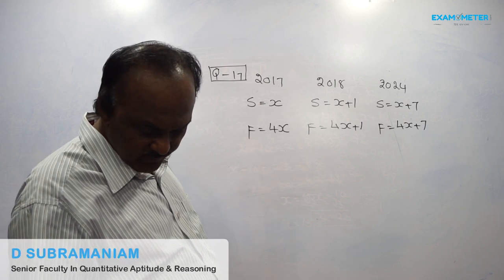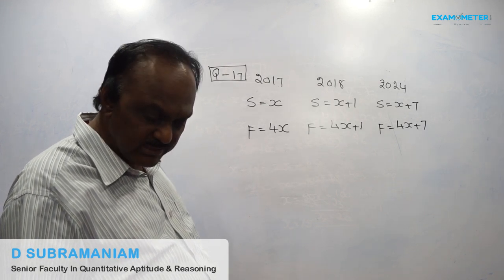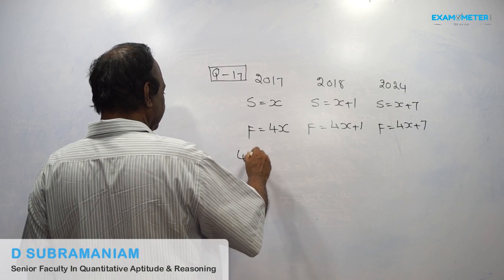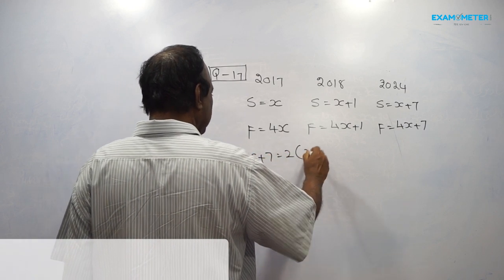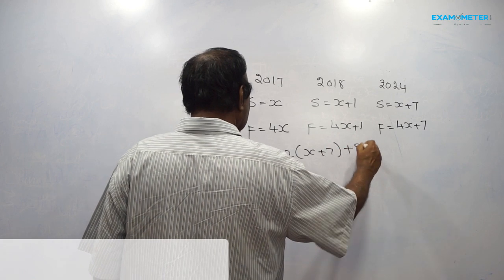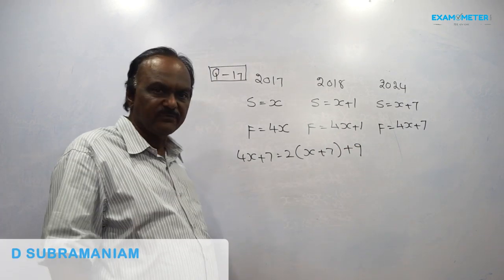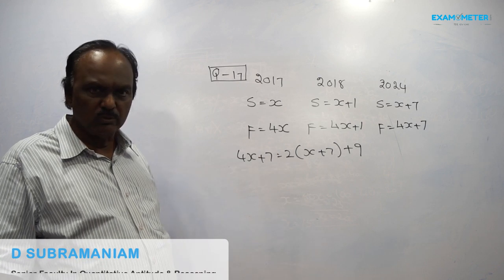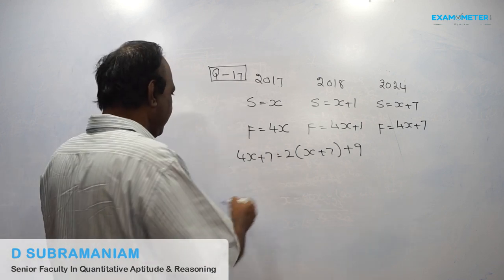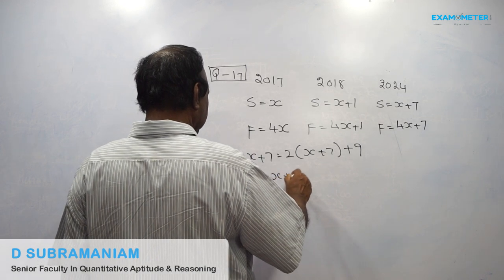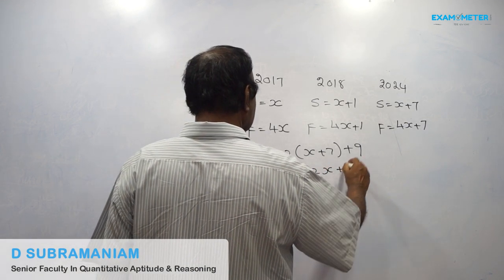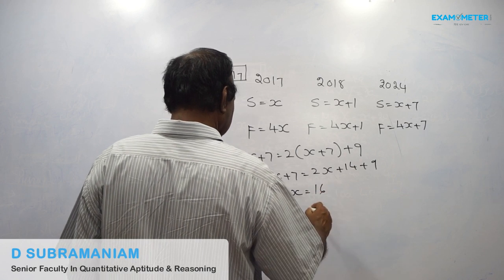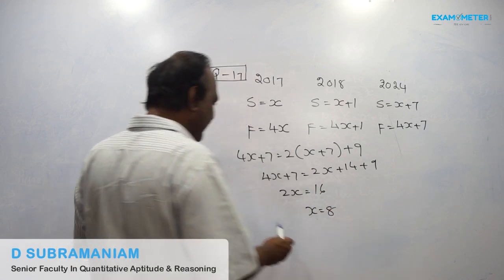After six years, if his age exceeds twice his son's age by nine years, then four x plus seven is equal to two into x plus seven, plus nine. After six years, father is four x plus seven, son is x plus seven — twice, so we are multiplying by two, plus nine years. So x value comes to eight.